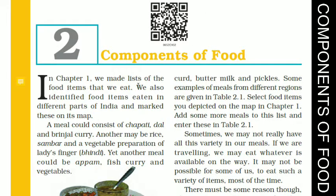In Chapter 1, we made lists of the food items that we eat. We also identified food items eaten in different parts of India and marked these on its map. In the first chapter, the name of the chapter was 'Food: Where Does It Come From?' In that, we discussed that all living organisms need food, the two main sources of our food are plants and animals, and living organisms need food for growth, energy, replacement and repair of damaged body parts, and protection against disease. We also discussed the food items eaten in different parts of India.